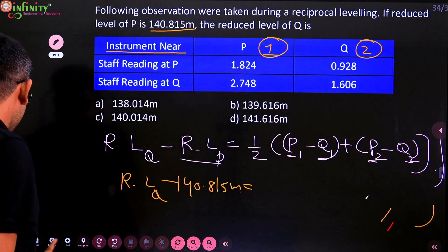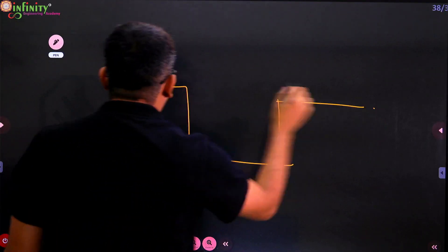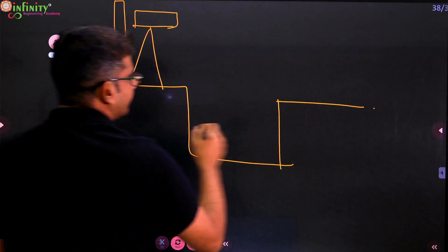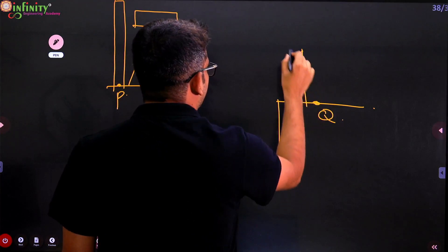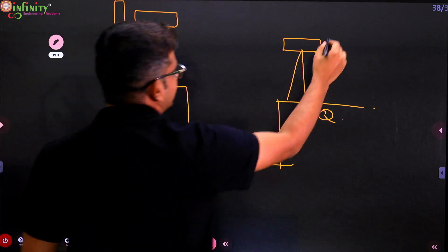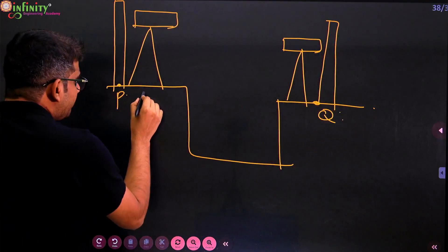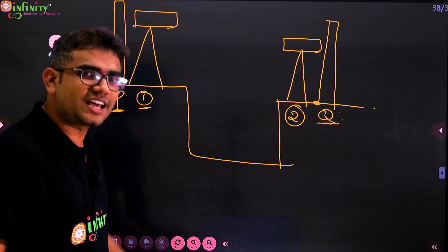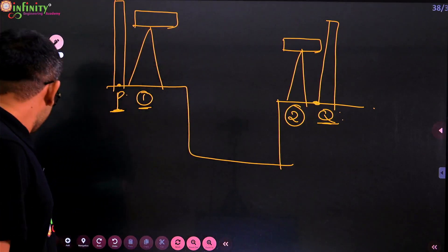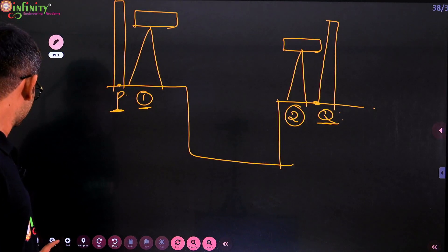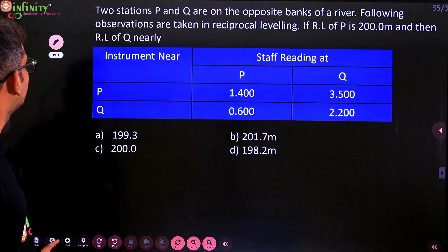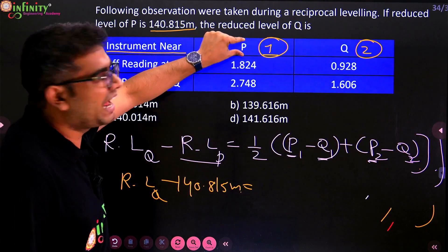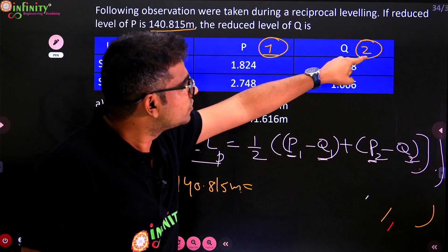Let me explain this by drawing a diagram. In reciprocal leveling, suppose this is station P and this is station Q. We have to place the instrument nearer to station P as well as nearer to station Q. Whenever I place the instrument nearer to station P, that is instrument position one. Whenever I place it nearer to station Q, that is instrument position two. These are always fixed — consider them like that only.